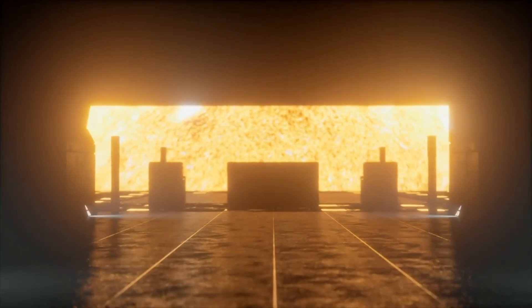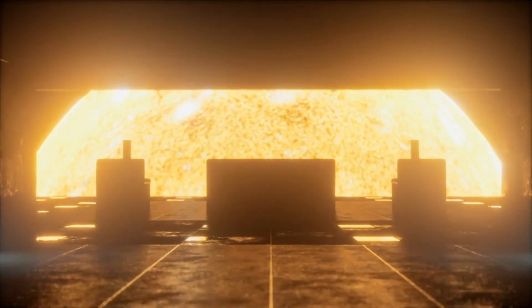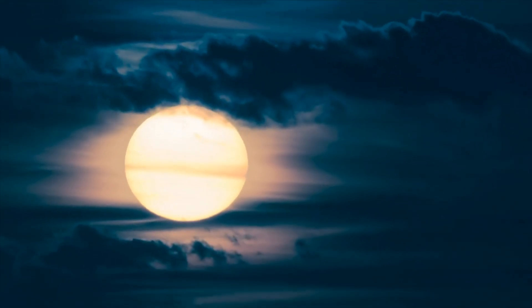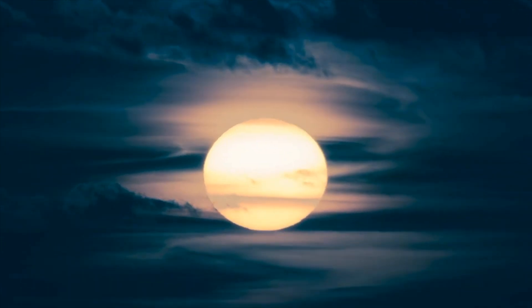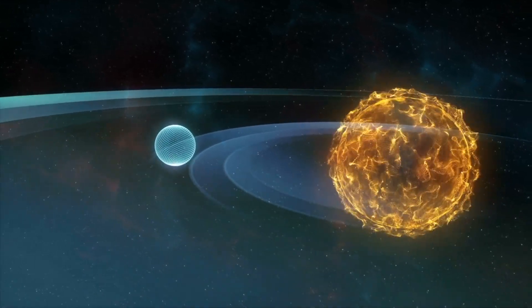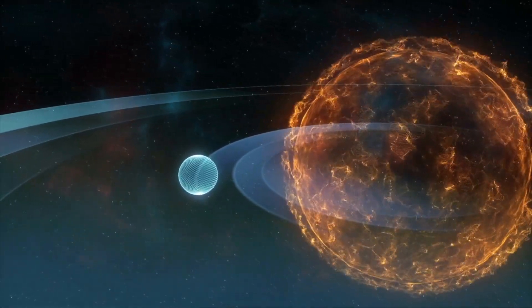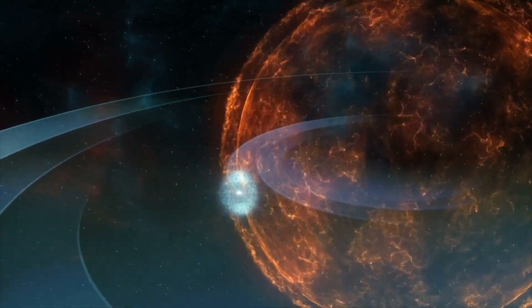Red supergiants are the biggest stars in the cosmos in terms of volume, with average diameters from hundreds to thousands of times that of the sun. If one of these supergiants were to take the place of our sun, its radius would stretch farther than Jupiter's orbit.